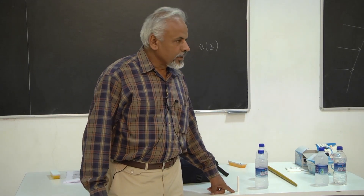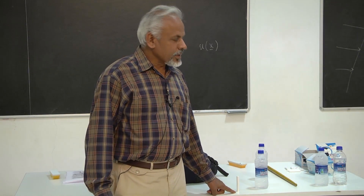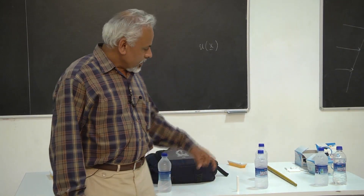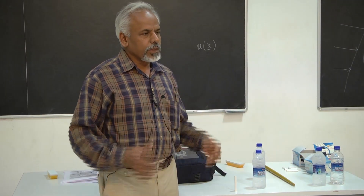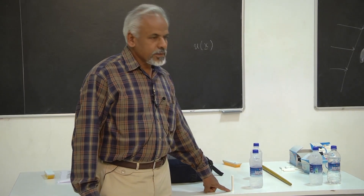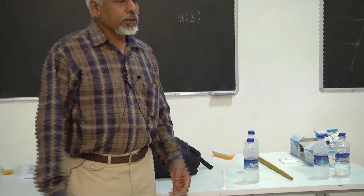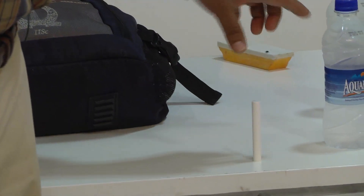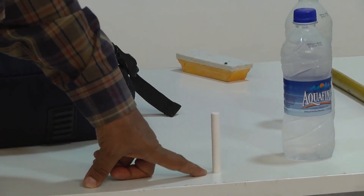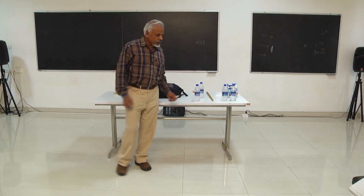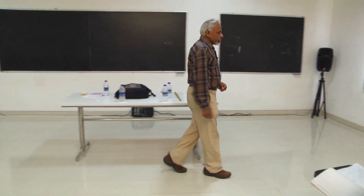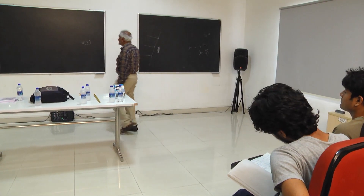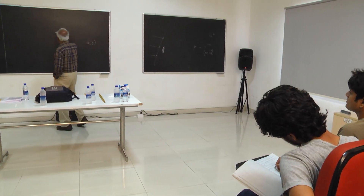The perturbation has died down because of friction. The air around it is trying to block the motion and the surface at the bottom is trying to restrain the motion. Because of that, the perturbation has died down. In a fluid flow it is the same except that you have a continuum medium. Let us say I have a plate and I blow air on it at some steady state.